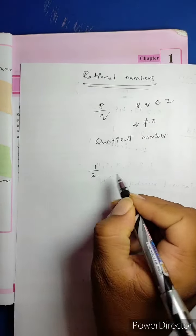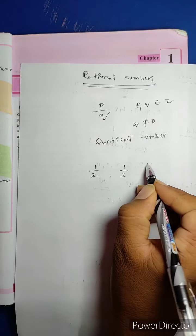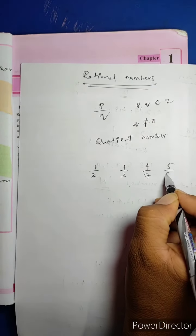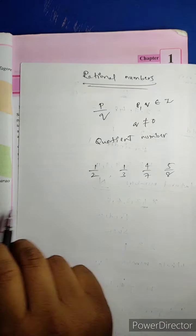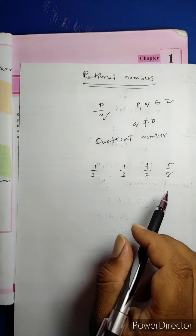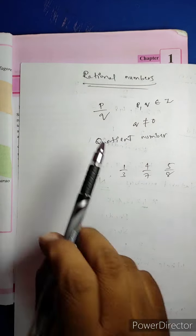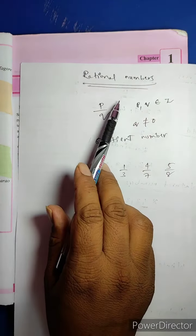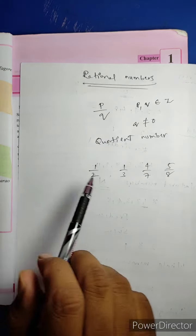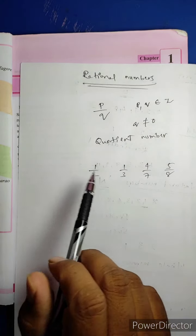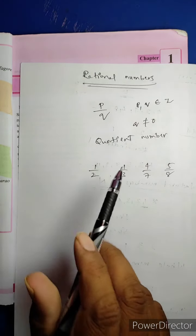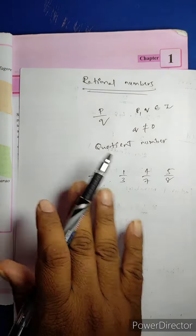For example: 1/2, 1/3, 4/7, 5/8 — all these fractions are also called rational numbers. But all rational numbers need not be fractions — the vice versa is not possible.